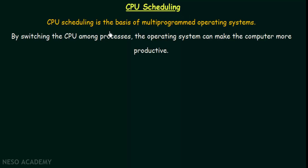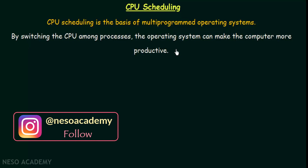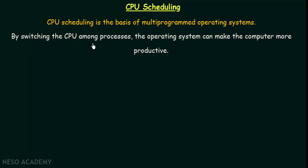CPU scheduling is the basis of multi-programmed operating systems. By switching the CPU among processes, the operating system can make the computer more productive. We are going to switch the CPU among different processes and thereby see how the productivity of our computer is going to improve.